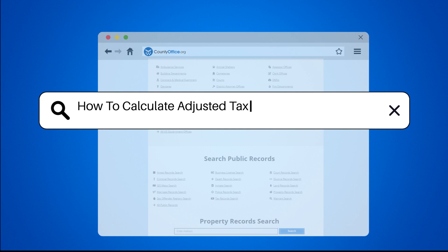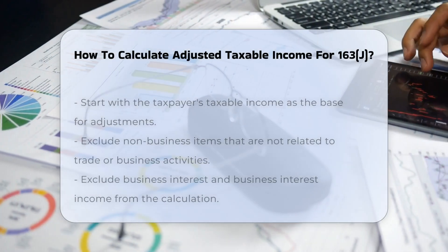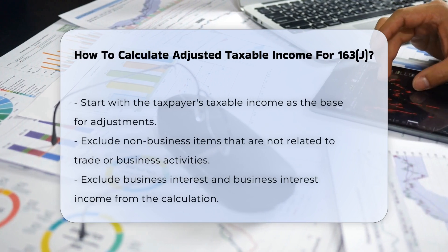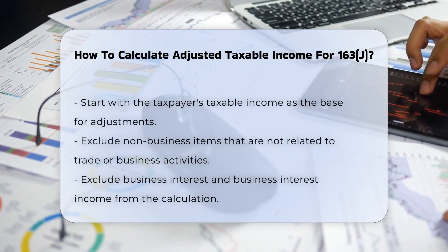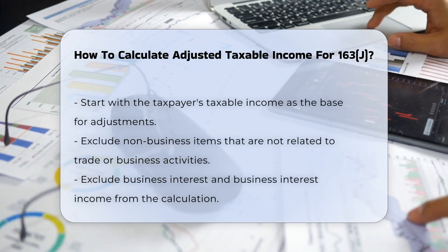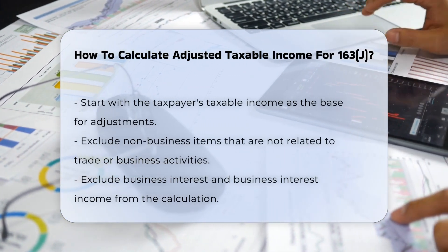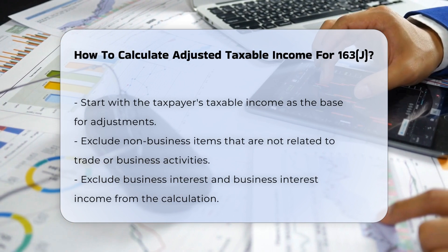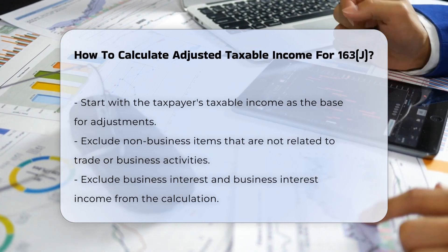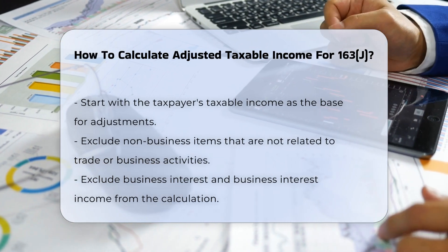How to Calculate Adjusted Taxable Income for 163(j). To calculate adjusted taxable income, ATI, for the purposes of Section 163(j) of the Internal Revenue Code, you need to follow a specific set of steps and considerations.